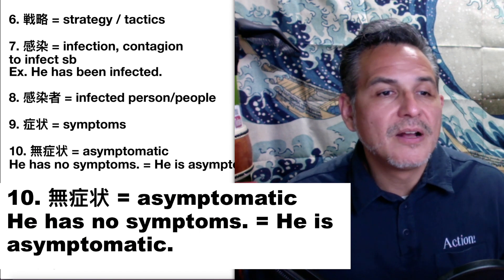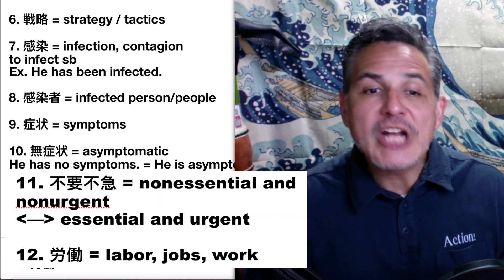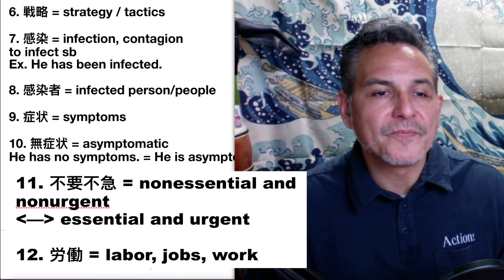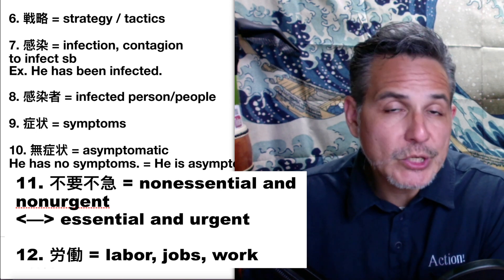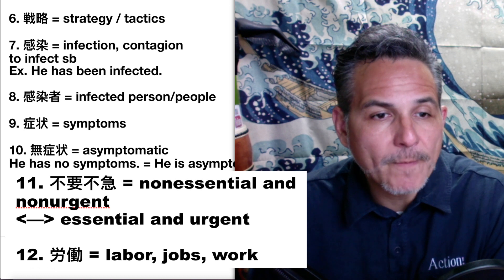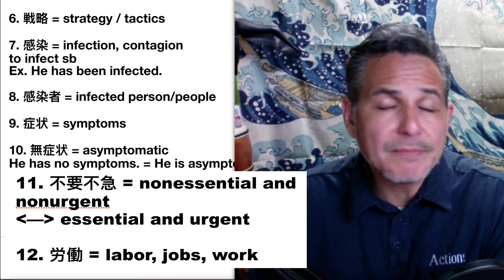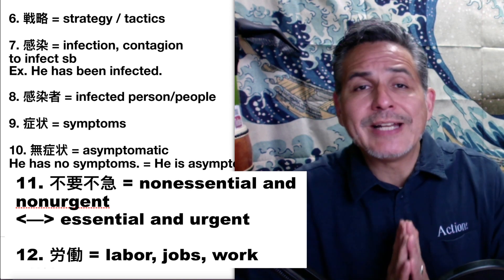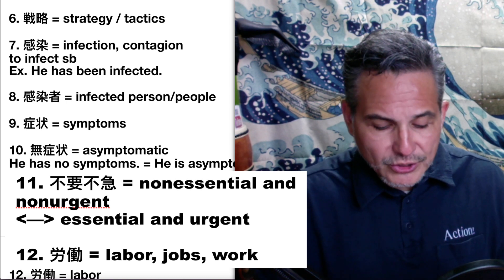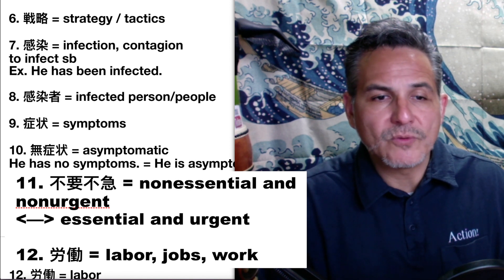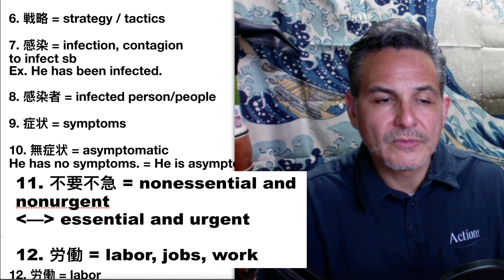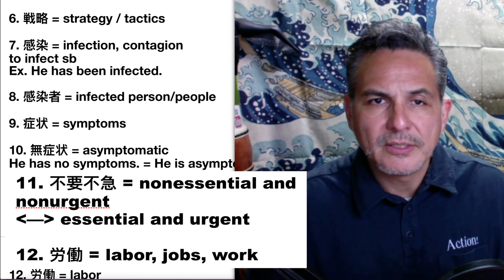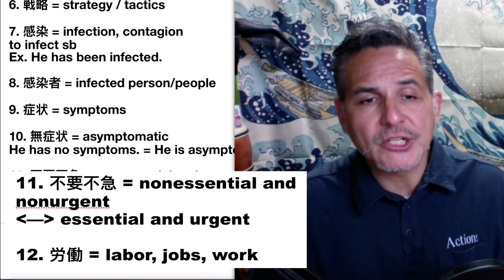Number eleven: non-essential and non-urgent. In Tokyo now, I believe the governor has asked people to stay home. And in many countries, many governments are asking people — please stay home unless you are essential and urgent. If you are non-essential and non-urgent, you should stay home. Essential is something that is necessary, and urgent is something that's very important and you have to do quickly.